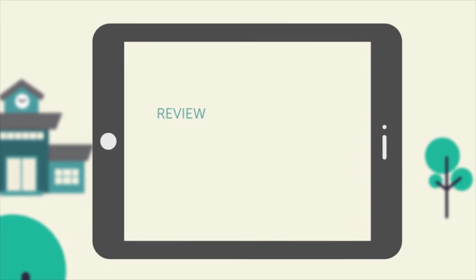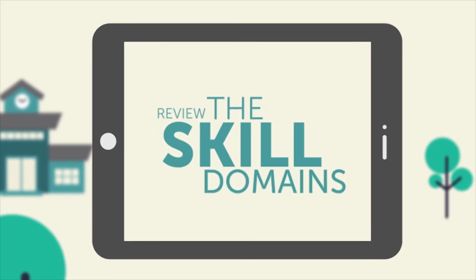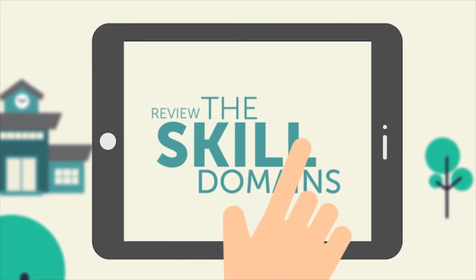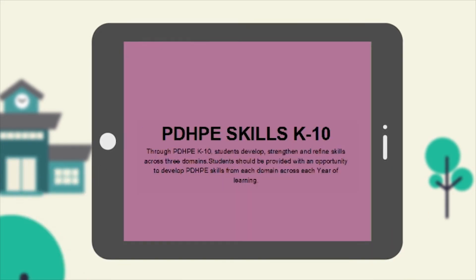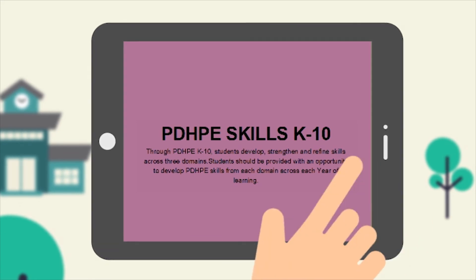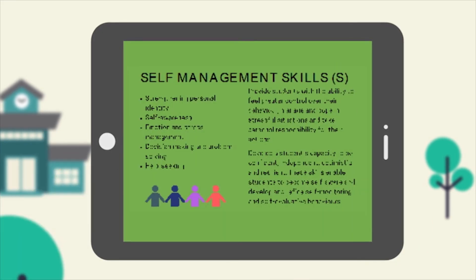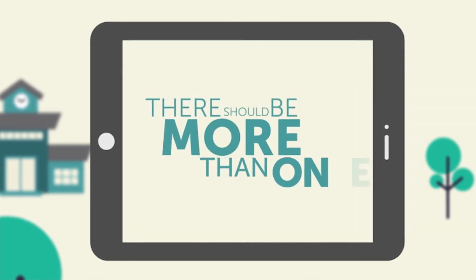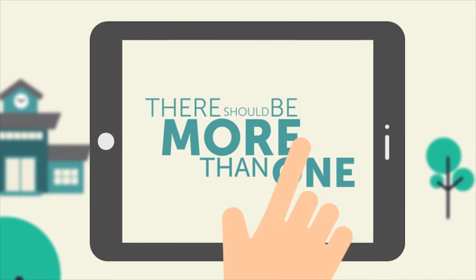Next, review the skill domains mapped to your chosen content, and identify the specific skills from each domain which will be a focus for the learning. The learning context should start to become clear at this point, if it hasn't already. There should be more than one learning context to link concepts together across strands.